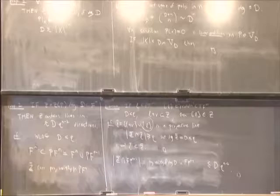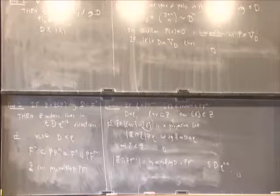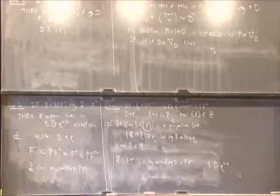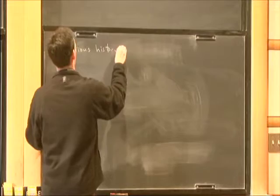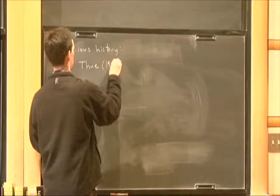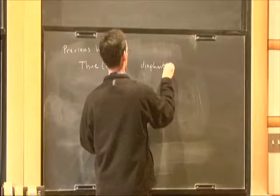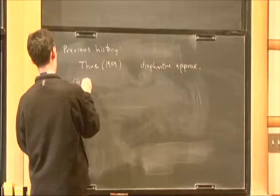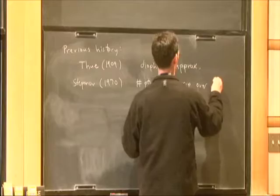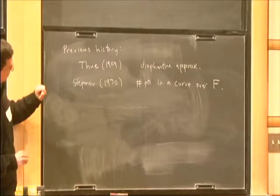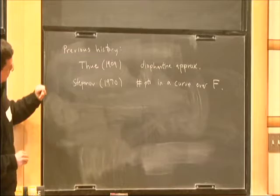This is what I think of as the archetypal example of the polynomial method. The key thing that defines the polynomial method is the use of Proposition 1. There is some previous history. The first person I would think of as doing something in this spirit was Thue in 1909, working on Diophantine approximation. Another important one was Stepanov around 1970, working on the number of points in a curve over a finite field. They both use the polynomial method in the sense that at some point in their proof, they find a useful polynomial not by constructing it explicitly but using Proposition 1 or something in that spirit.